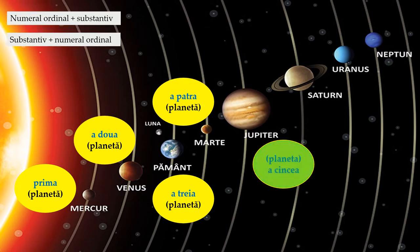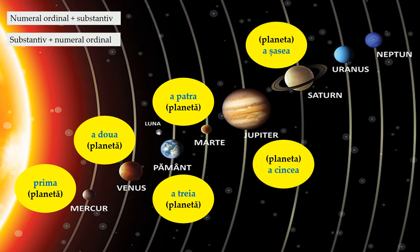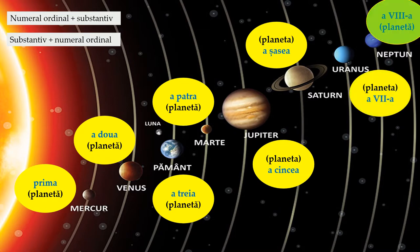Sau, după substantiv, ca în exemplele planeta a cincea, planeta a șasea. Numeralele ordinale pot fi redate prin cuvinte sau o combinație de litere și cifre romane, ca în exemplele planeta a șaptea sau a opta planetă.